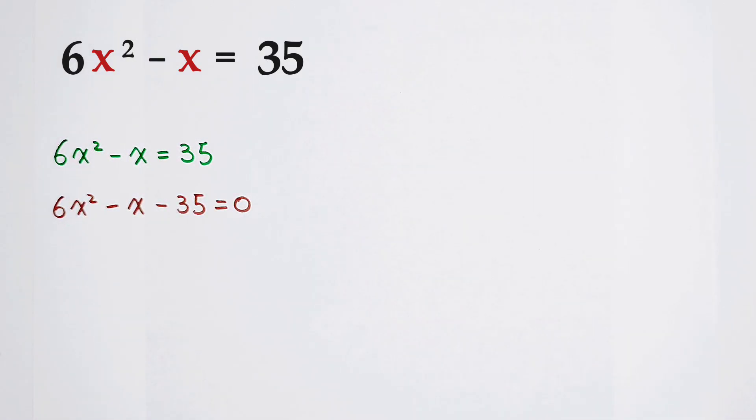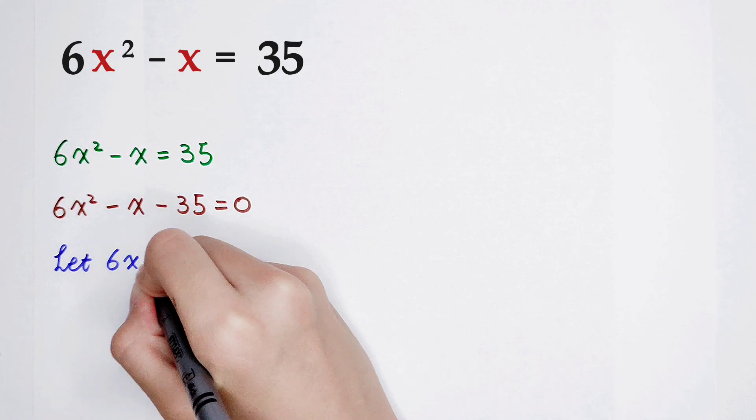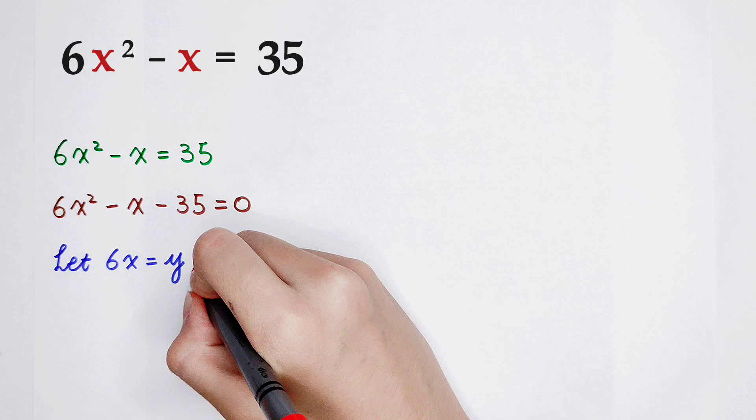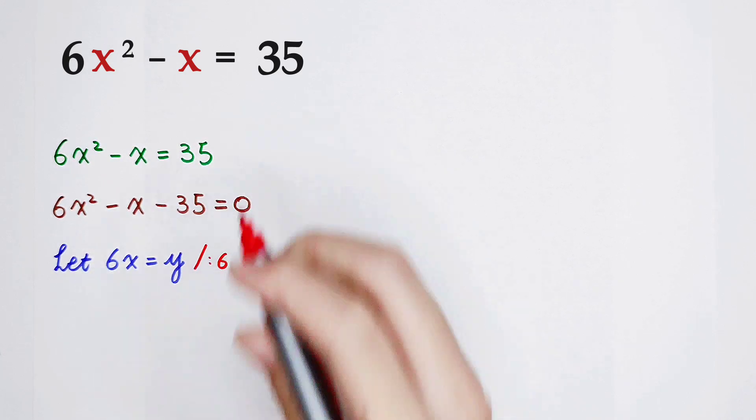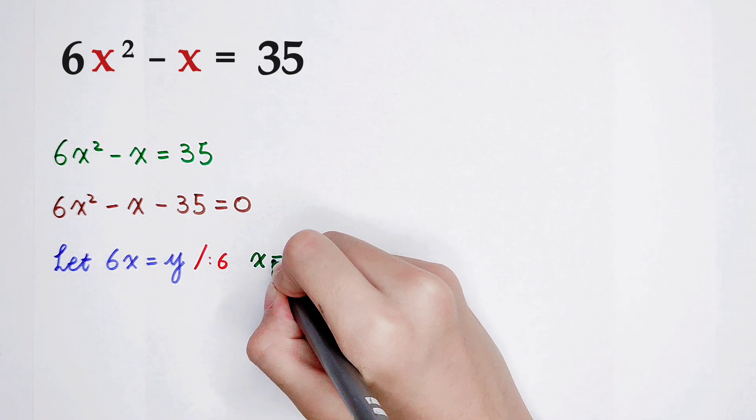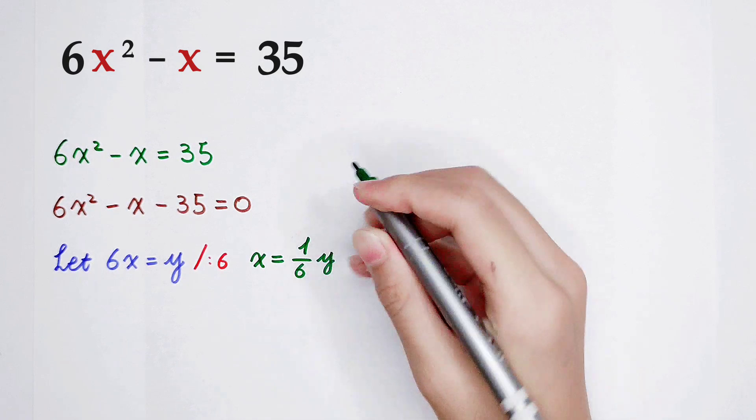Now, I have a really wonderful way for you. We let 6x equal y. Then, divided by 6 on both sides, x equals 1/6 times y.